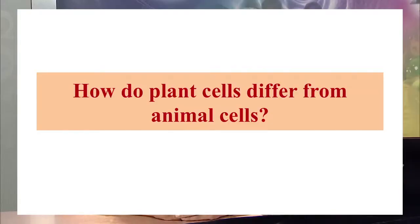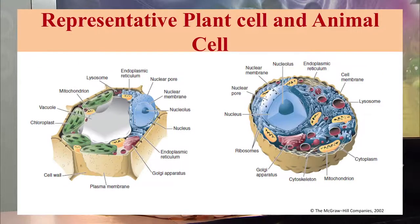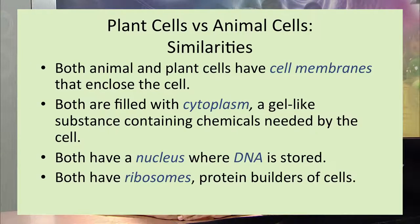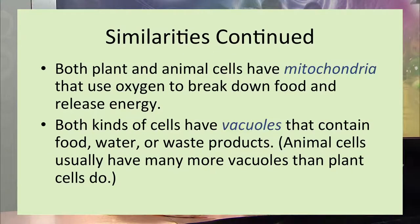Now we will look at the difference between the plant cell and the animal cell. There are a number of similarities: both plant and animal cells have a cell membrane that encloses the cell, both are filled with cytoplasm — a gel-like substance containing chemicals needed by the cell, both have a nucleus where DNA is stored, both have ribosomes as protein builders, and both have mitochondria that use oxygen to break down food and release energy.